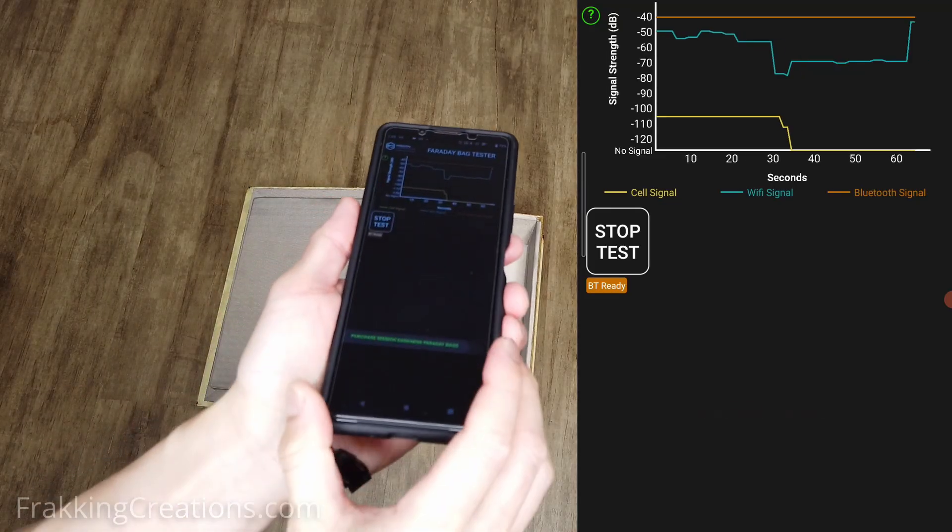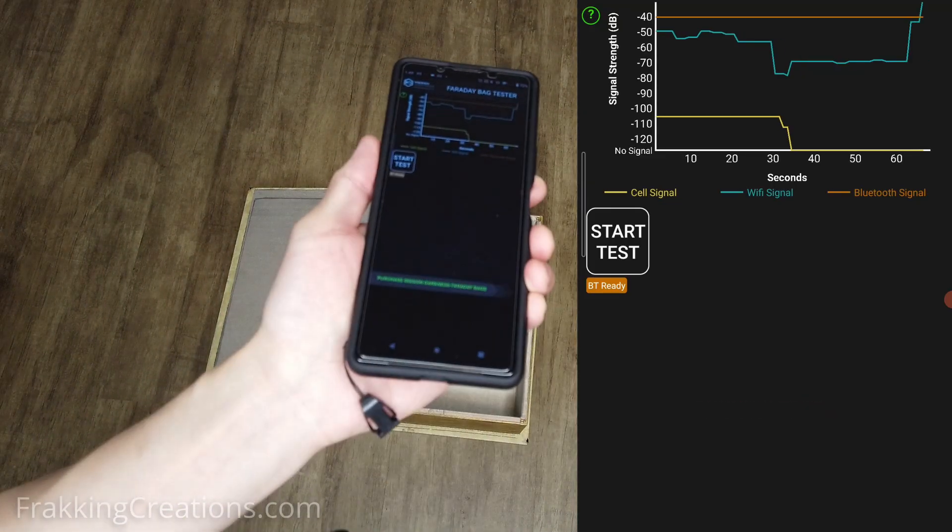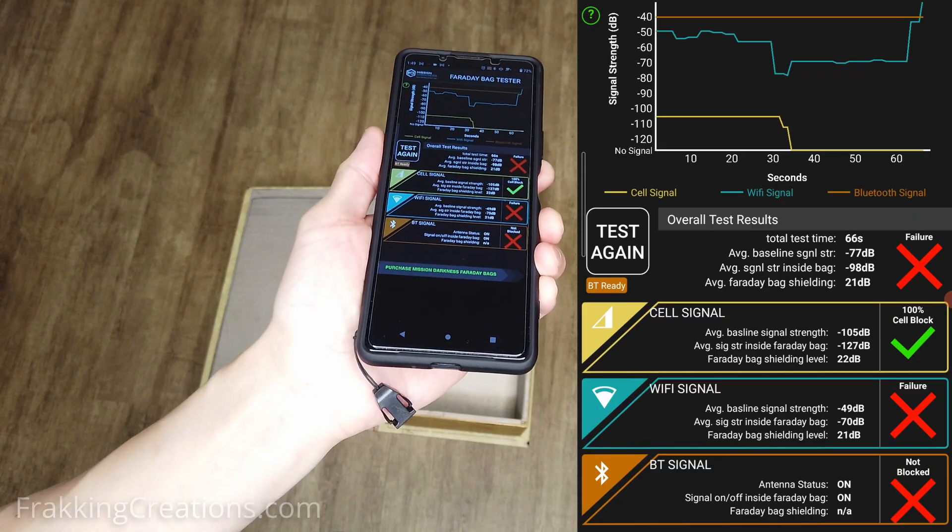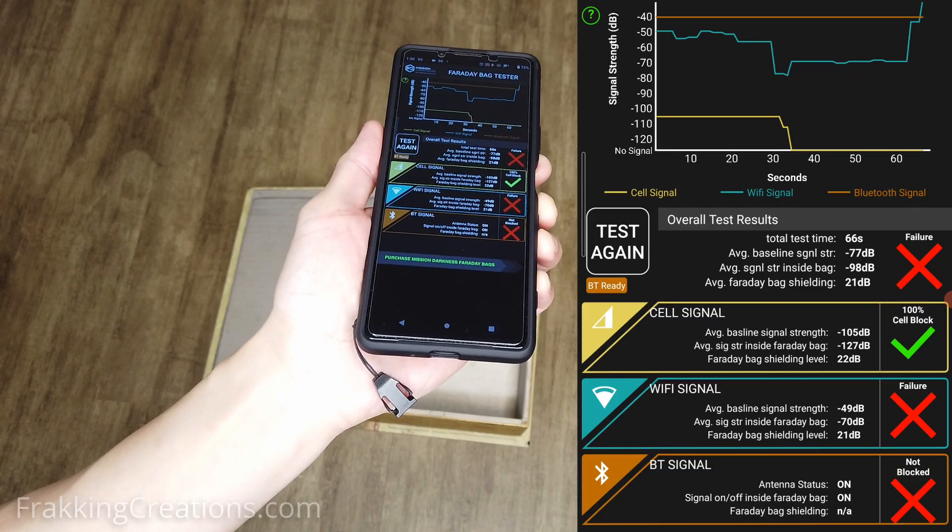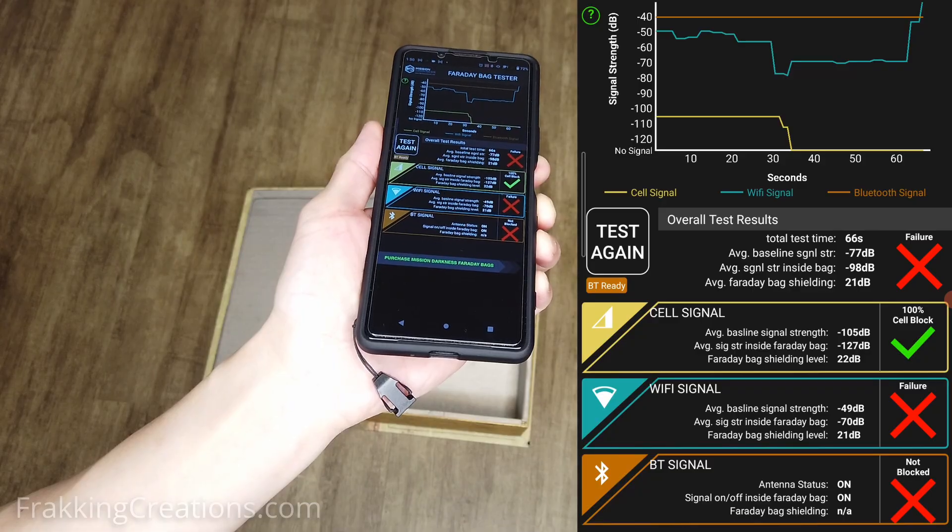We see that only the cell signals are blocked. Bluetooth and Wi-Fi are still getting through. Note that the Wi-Fi router and Bluetooth speaker used for the test are in the same room which means that the signal strengths are quite high.